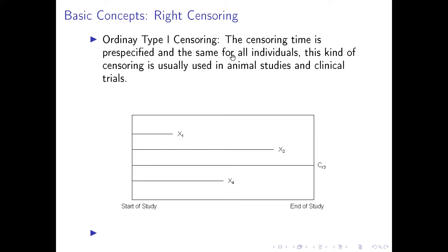So here is a graph of what is called, in technical terms, ordinary Type I censoring. That is, the censoring time is pre-specified and the same for all individuals. This kind of censoring is usually used in animal studies and clinical trials. So here we have start of study, the same time, and then we have end of study, the same time. We have four observations, and we begin to observe these cases at the same time, that is the start of study.